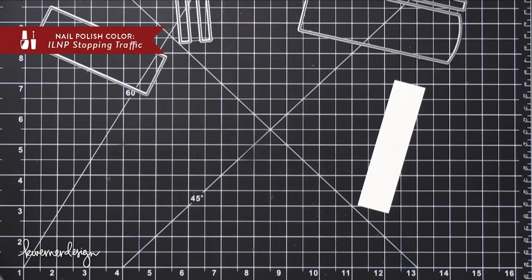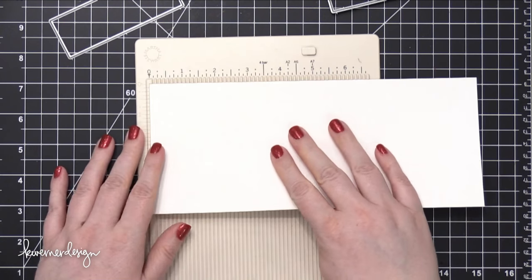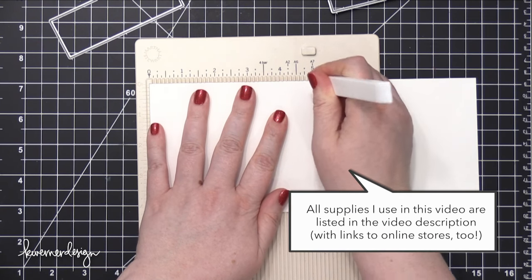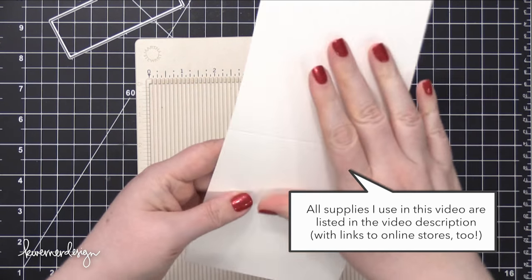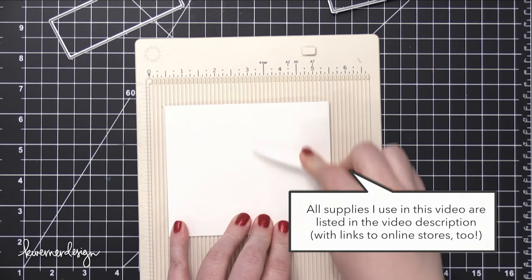I then cut the actual pocket that creates the slider mechanism. This is 10 inches long by four and a quarter tall and then I've scored it at five inches. Eventually I will cut this down, but for now this is the size that I'm working with.